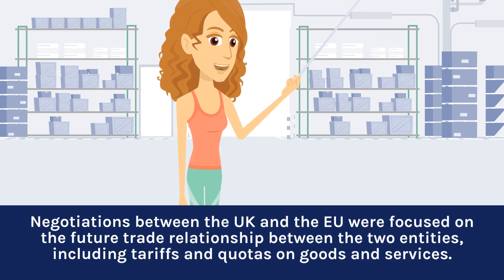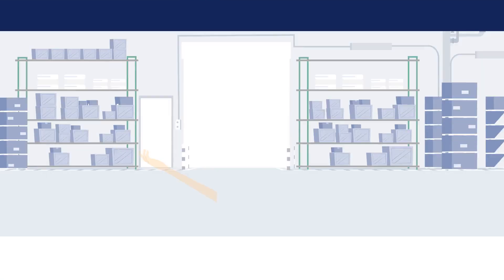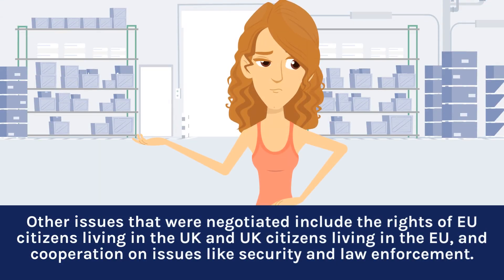Negotiations between the UK and the EU were focused on the future trade relationship between the two entities, including tariffs and quotas on goods and services. Other issues that were negotiated include the rights of EU citizens living in the UK and UK citizens living in the EU, and cooperation on issues like security and law enforcement.